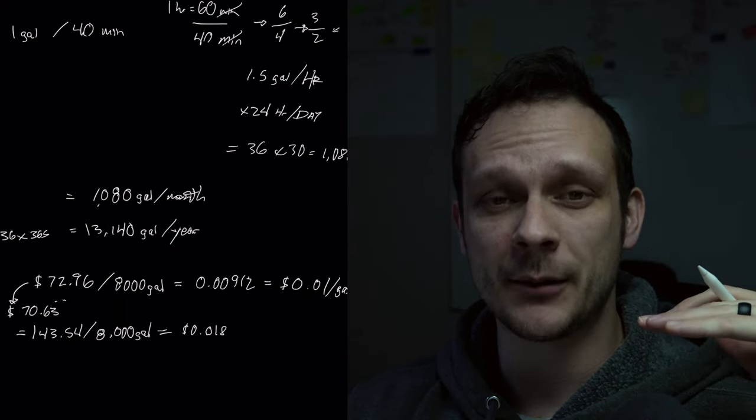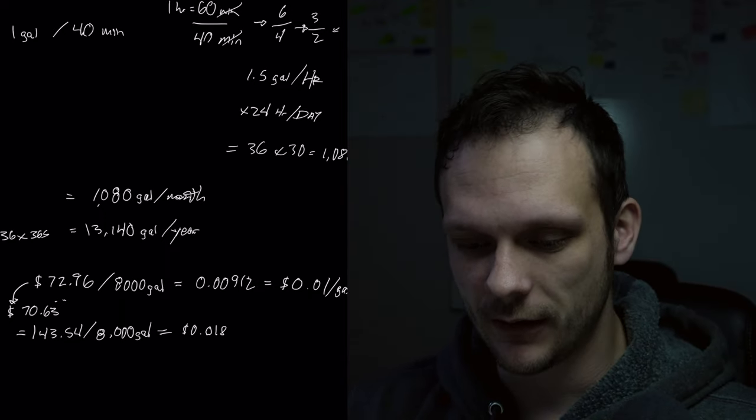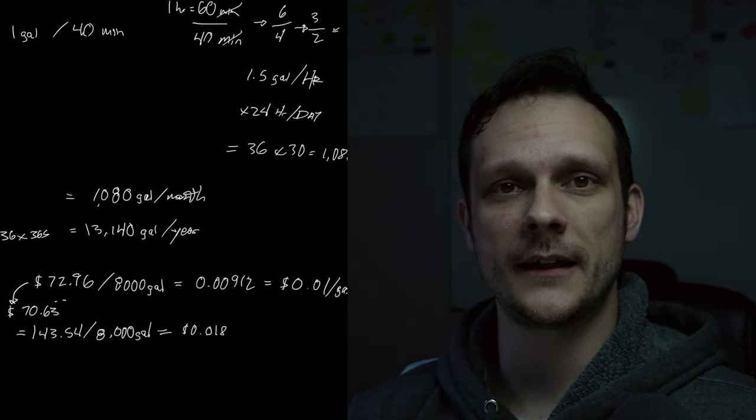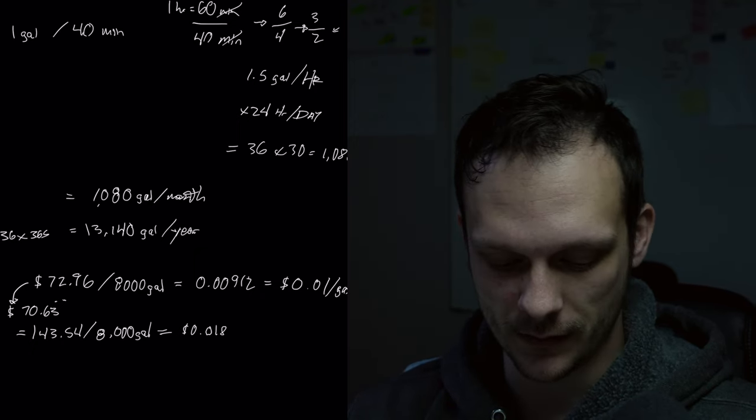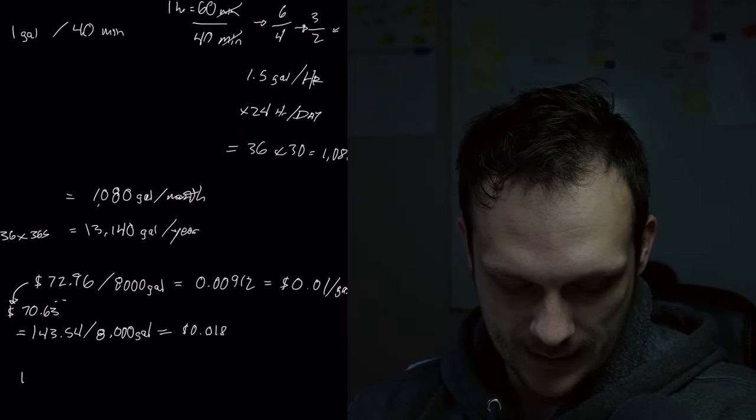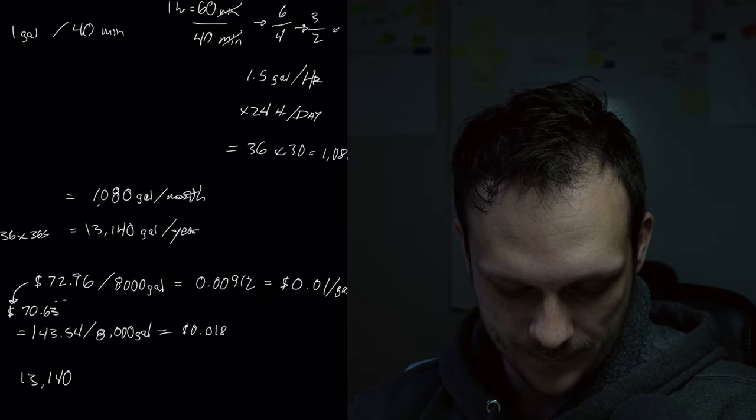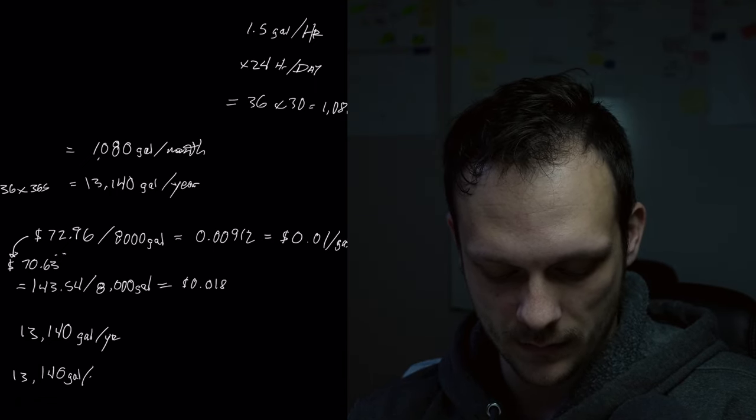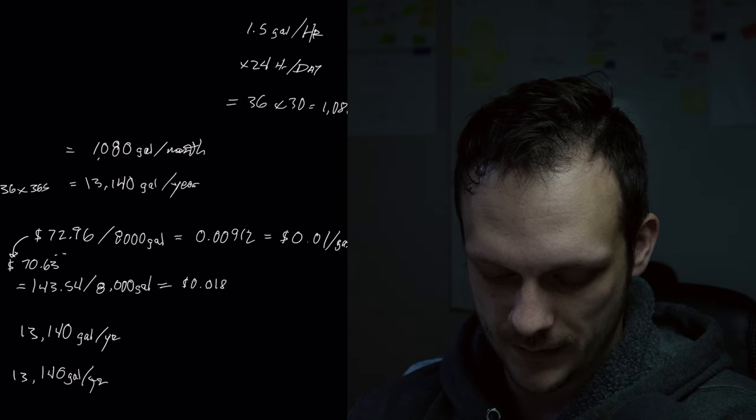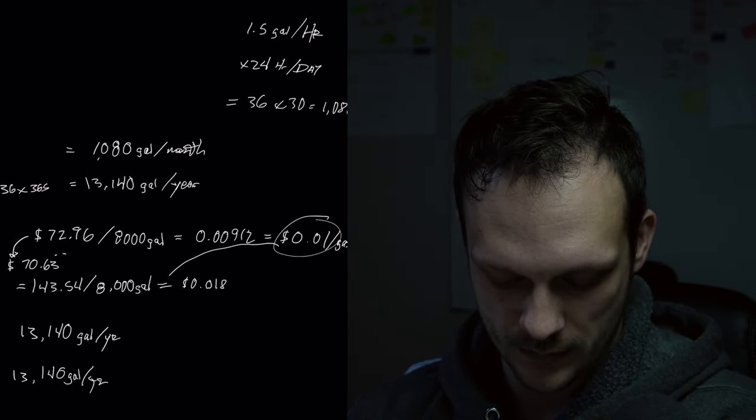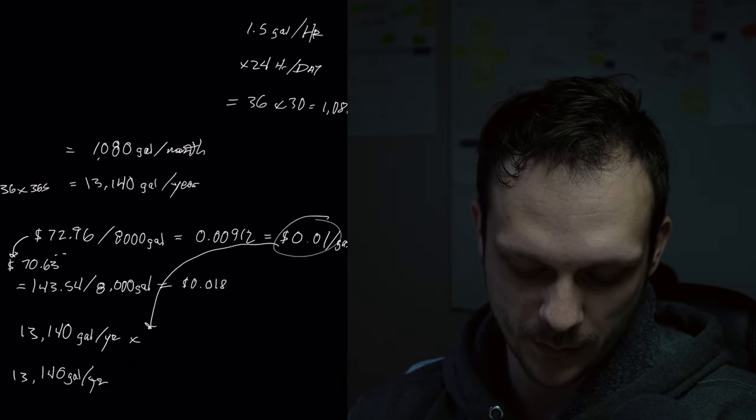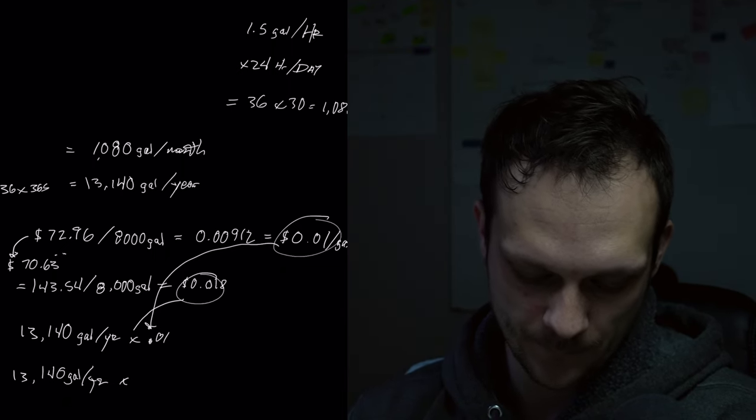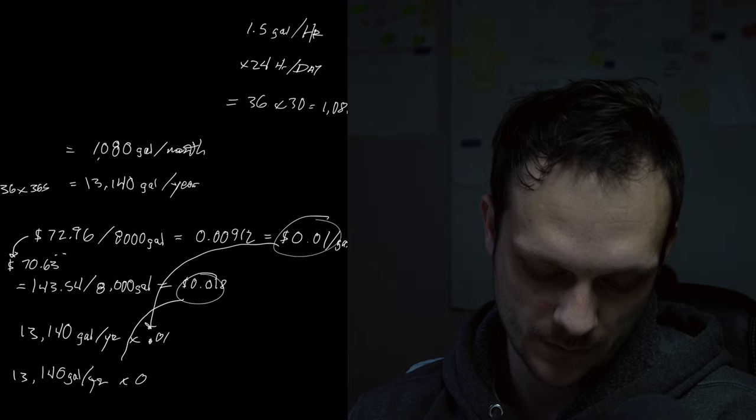We figured out our leakage rate, we figured out how much water costs us. I'm going to use both these scenarios then to calculate how much this water is actually costing us. So let's do it on an annual basis, say you don't take care of this leak for a year. So we have our 13,140 gallons. In both cases, we're going to take our 13,140 gallons per year and multiply it by the numbers that we just found. So we're going to multiply this by 0.01, and we'll multiply this one by this number, 0.018.